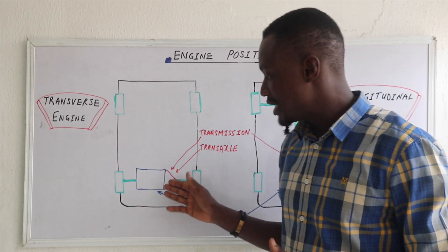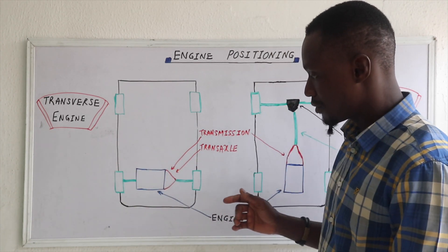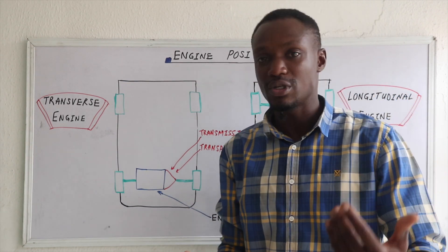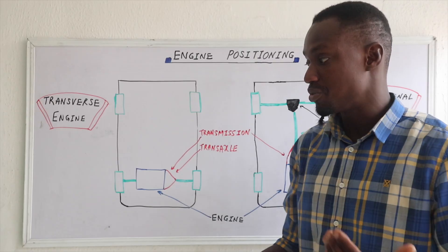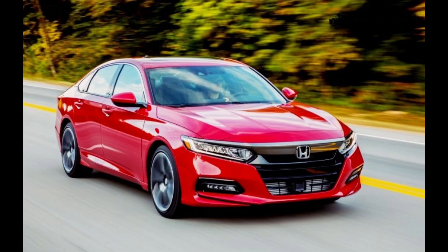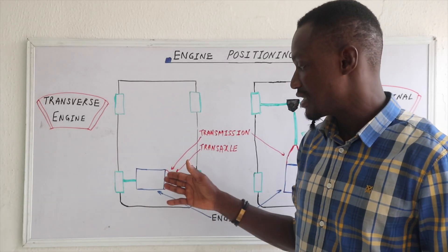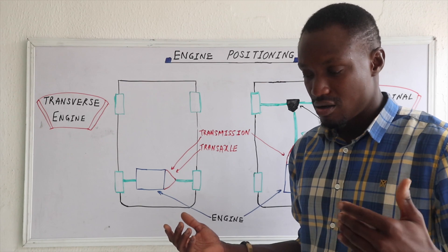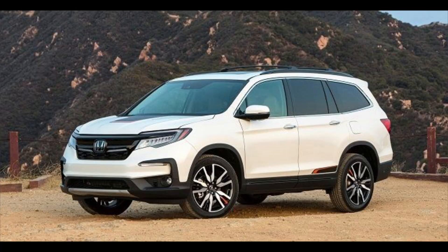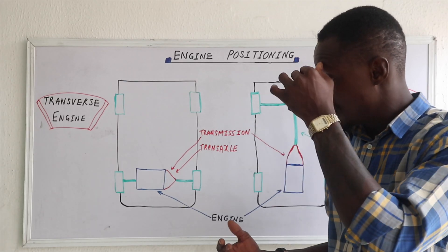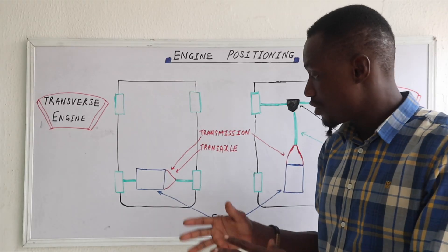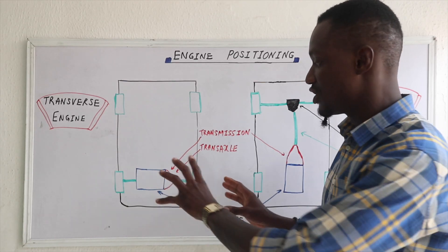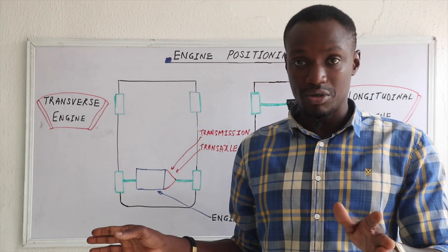The transverse layout is found mainly in front-wheel drive vehicles. We also find this in all-wheel drive vehicles — front-wheel drive vehicles like the Toyota Camry, most Toyota sedans, Honda sedans, our common cars. And in all-wheel drive cars such as the Kia Sportage, Honda Pilot, Honda CR-V, Toyota RAV4 — all those cars that have all-wheel drive. This is the common positioning.